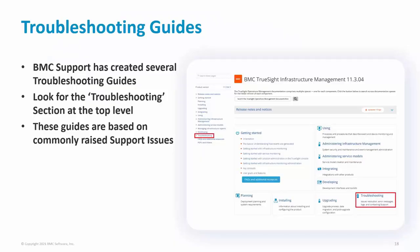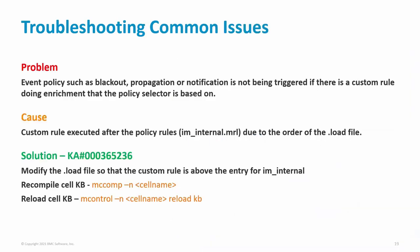TrueSight Operations Management has its own troubleshooting section in the BMC documentation. The purpose of these troubleshooting guides is to understand, identify, and self-solve. Even if you are not able to self-solve, you'll already have the items and data needed to open a better support case. The troubleshooting section is located in the navigation pane on the TrueSight page, as well as in the link highlighted on the bottom right of the screen.